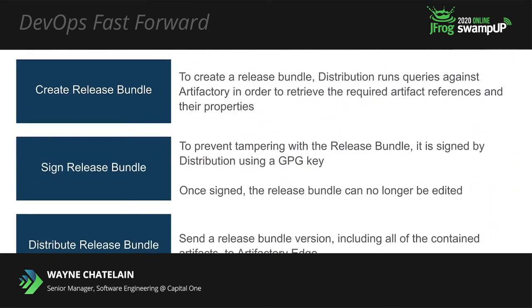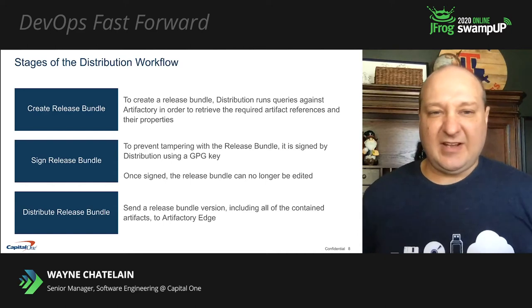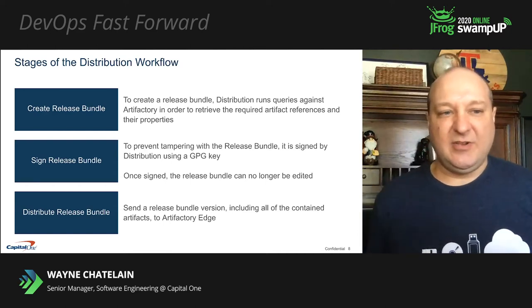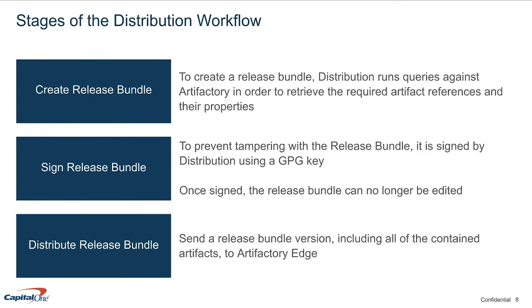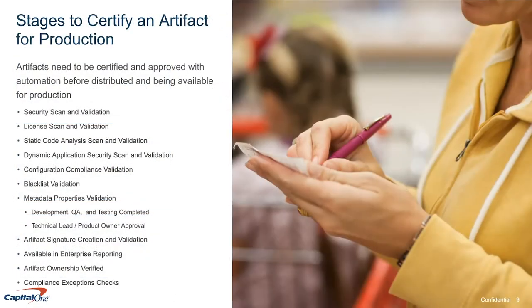Next, let's take a look at the different stages of the distribution workflow that's enabled with Enterprise Plus. There are three main stages in the distribution workflow. First, we want to create a release bundle — this release bundle will contain all of the artifacts that we want to distribute. Next, we're going to sign that release bundle to ensure it's immutable and cannot be changed during the distribution process. Then we want to distribute the release bundle, which will move the artifacts out to our edge nodes. For the purposes of our definitive software library, let's look at some examples of techniques that we're going to leverage to certify that an artifact is approved for use in our organization.